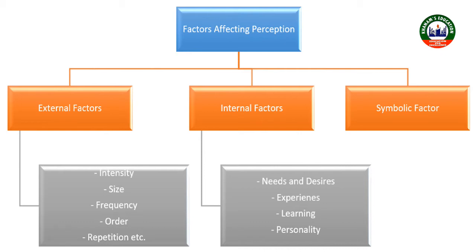Another factor is motives and needs. Our motives and needs definitely affect our perception. For example, a hungry person is motivated to recognize only food items among other articles. Their attention cannot be directed towards other things until their motive is satisfied. This shows that motives and needs are important factors that affect our perception.